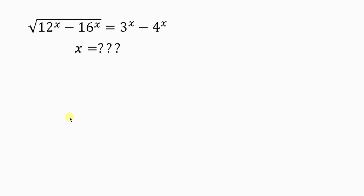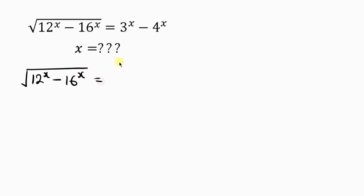Let's look at this fine question from Olympia. It says: the square root of 12 to power x minus 16 to power x is equal to 3 to power x minus 4 to power x. We are to find the value of x.